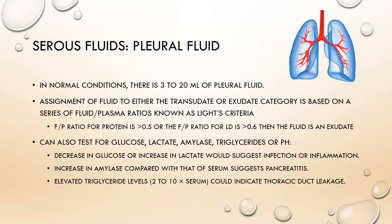In normal conditions there is 3 to 20 milliliters of pleural fluid around the lungs. The assignment of fluid to either transudate or exudate category is based on a series of fluid-to-plasma ratios known as Light's criteria. If the fluid-to-plasma ratio of protein is greater than 0.5, or the fluid-to-plasma ratio for LDH is greater than 0.6, the fluid is classified as an exudate. You can also test for glucose, lactate, amylase, and triglycerides or pH. A decrease in glucose or an increase in lactate suggests infection or inflammation. An increase in amylase compared with serum is suggestive of pancreatitis, and elevated triglyceride levels 2 to 10 times that of serum could indicate thoracic duct leakage.